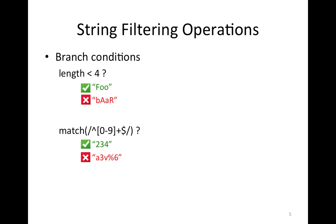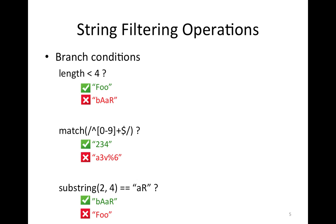For example, this string is not going to satisfy the constraint because it contains the letter V, which is not a digit. Finally, this is another filtering operation. The strings that are going to satisfy this branch condition are strings that have the third and fourth characters as small 'a' and capital R. Notice that we start the indexing from 0, so we said index 2 up to 3, but not including 4. For example, this string satisfies the constraint because at index 2 we have small 'a' and index 3 is capital R, but this other string does not satisfy the constraint.